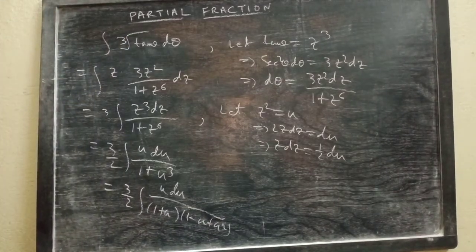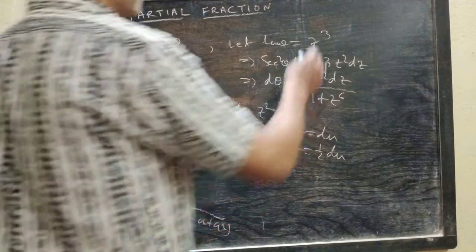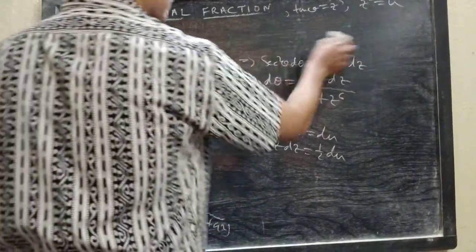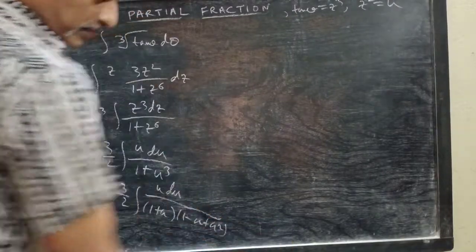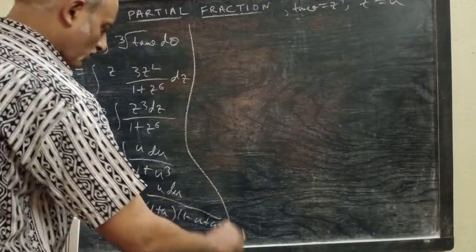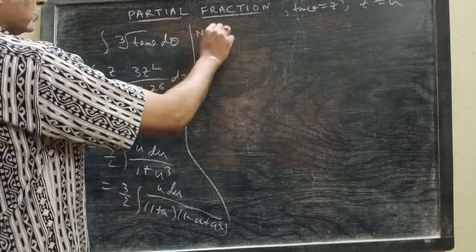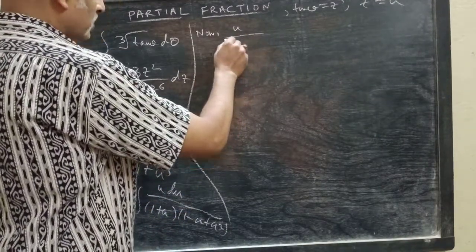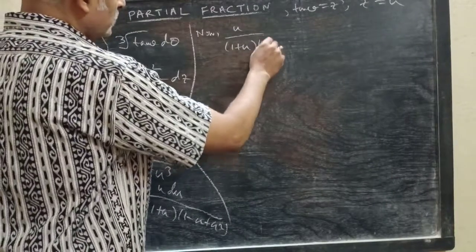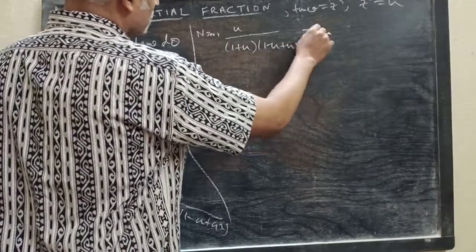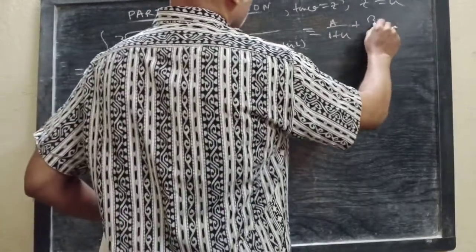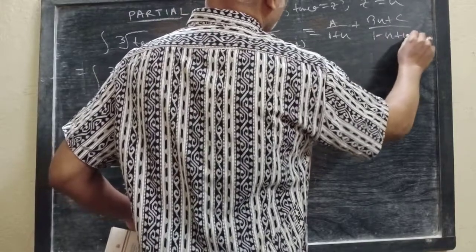Now I have to do partial fractions here. Let me write the substitution: z³ and z² = u. So u / [(1 + u)(1 − u + u²)] equals A/(1 + u) + (Bu + C)/(1 − u + u²).